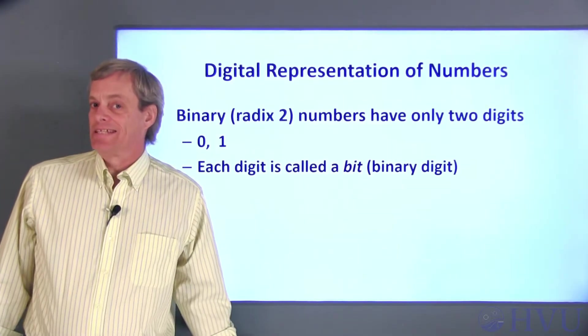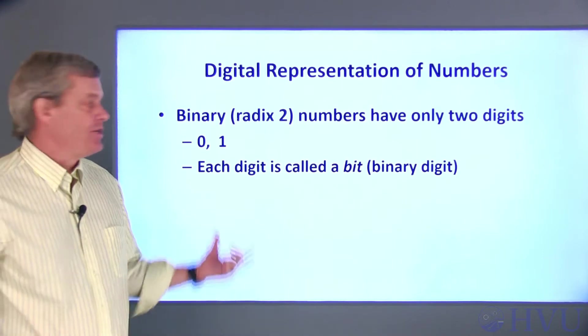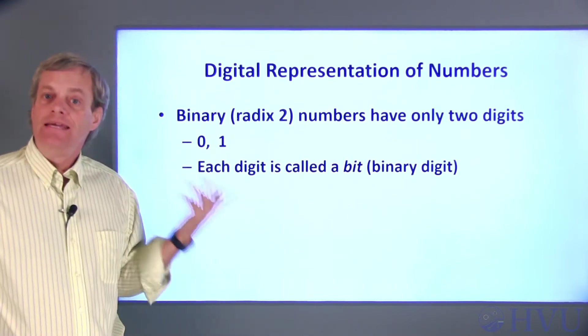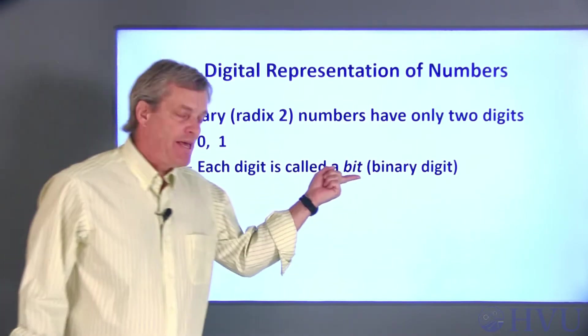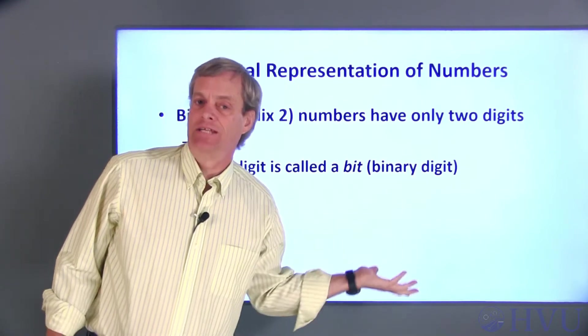Binary numbers are interpreted in the same way, but they have only two digits, 0 and 1. Each digit, by the way, is called a bit, which is just short for binary digit.